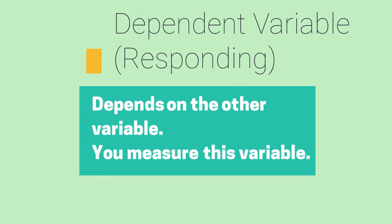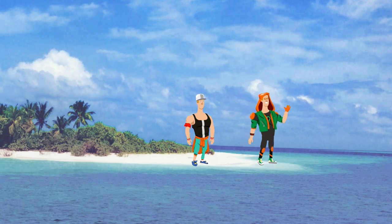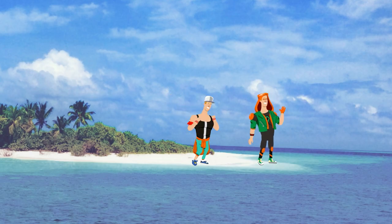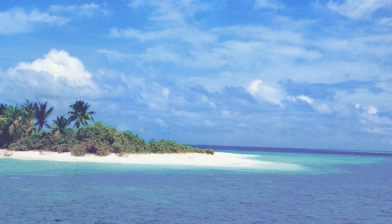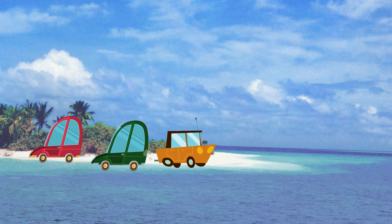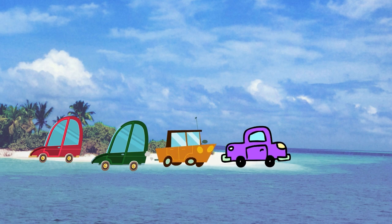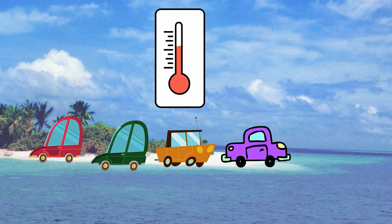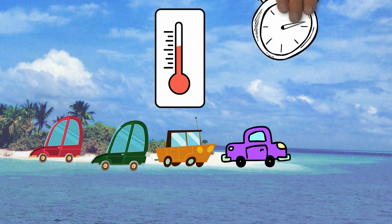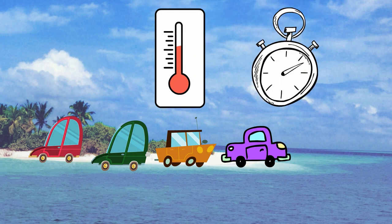Let's look at some examples. It is summer time and you would like to know if the color of the car impacts the inside temperature of the car. You find four cars of different colors and park them outside. You measure the inside temperature of each car every 30 minutes for 2 hours.